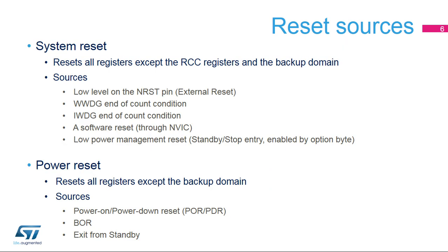The first type of reset is the system reset, which resets all the registers except certain registers for the reset and clock controller. It also does not reset the backup domain. The system reset sources are the external reset generated by a low level on the NRST pin, a window watchdog event, an independent watchdog event, a software event through the nested vectored interrupt controller, and a low power mode security reset, which is generated when stop or standby mode is entered but is prohibited by the option byte configuration. The reset source flag can be found in the RCC control and status register.